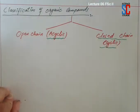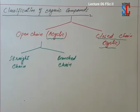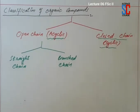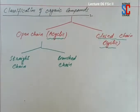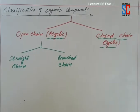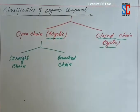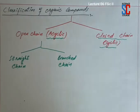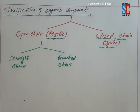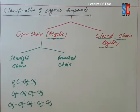Open chain compounds are further classified into two types: straight chain and branch chain. Straight chain are those compounds in which one carbon atom is directly attached with maximum two carbon atoms, no more than two. While branch chain compounds are those in which one carbon atom is directly attached with three or four carbon atoms.